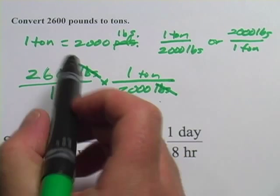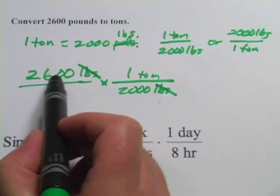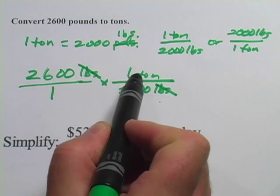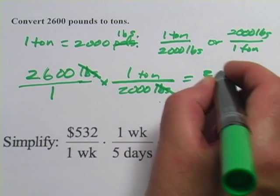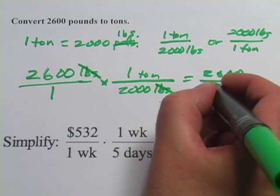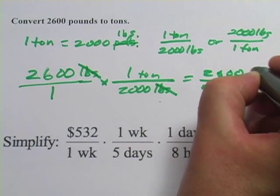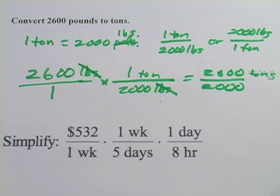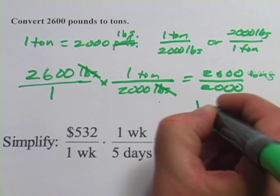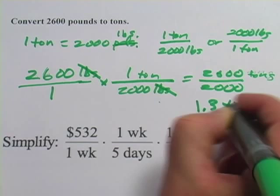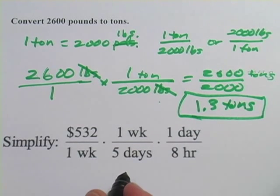Now all we have to do is the multiplication. With fractions, you multiply across the top, we have 2,600 times 1, that's just 2,600. And we have 1 times 2,000, that's just 2,000, this is tons. So now we just have to do a little bit of division here, 2,600 divided by 2,000, and we've got 1.3 tons. And that is our answer.